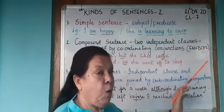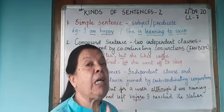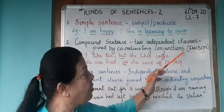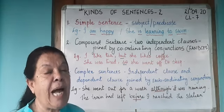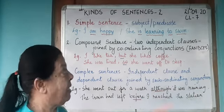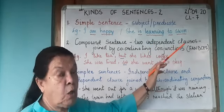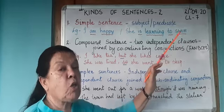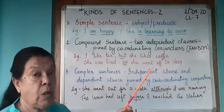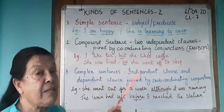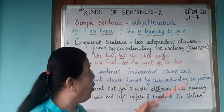So if you remember FANBOYS, you will be able to remember the coordinating conjunctions. And whenever you see these conjunctions, you will immediately know that it is a compound sentence. Now, we are saying 'independent clause.' A clause is also a part of a sentence. But when it can stand on its own and give complete meaning on its own, I call it an independent clause.